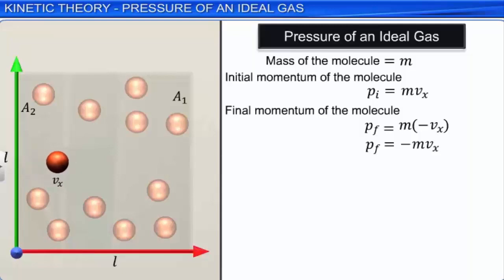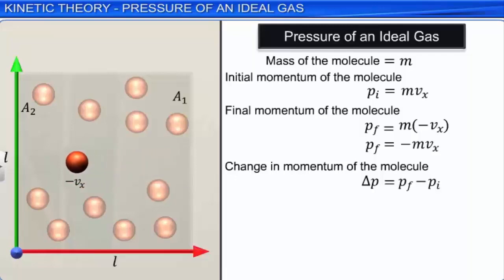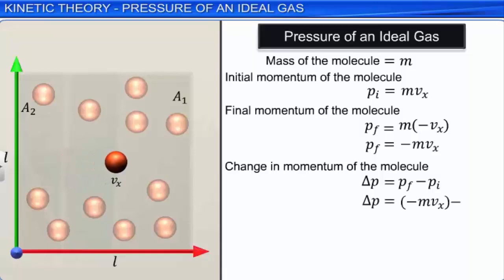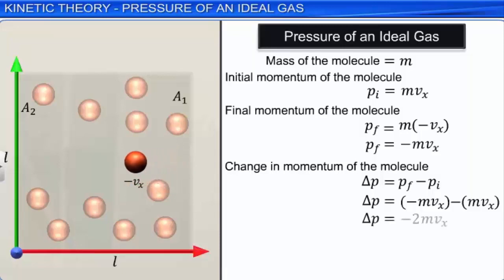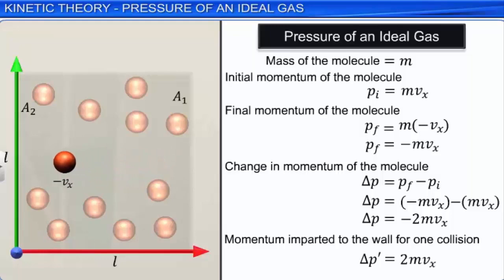Therefore, the change in momentum of the molecule is ΔP = Pf − Pi = −mVx − mVx = −2mVx. As the collision is elastic and momentum is conserved, the momentum imparted to the wall for one collision, ΔP', is equal to 2mVx. If the molecule travels with constant velocity along the X axis without any collision, and reaches face A2, the distance between faces A1 and A2 is L. The time taken to travel from A1 to A2 is L/Vx.